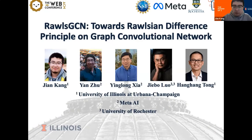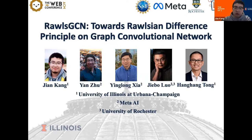Hello everyone. This is Jian Kang from URUC, and I'm going to present our work: Browse Descent Towards Browsing Difference Principle and Graph Convolutional Network. This is a joint work with Dr. Yan Zhu and Dr. Yong Xia from Meta AI, Dr. Ji Boluo from University of Rochester, and Dr. Ha Antong from URUC.